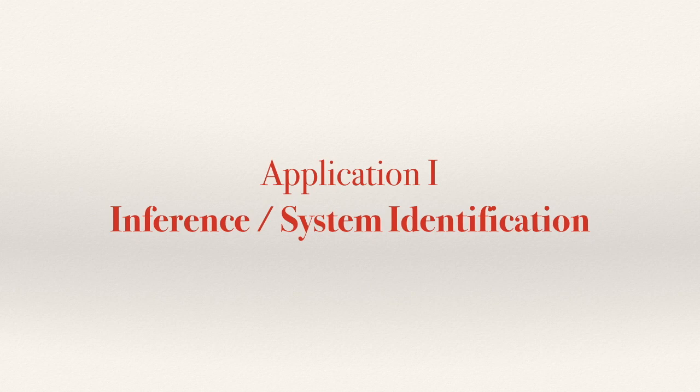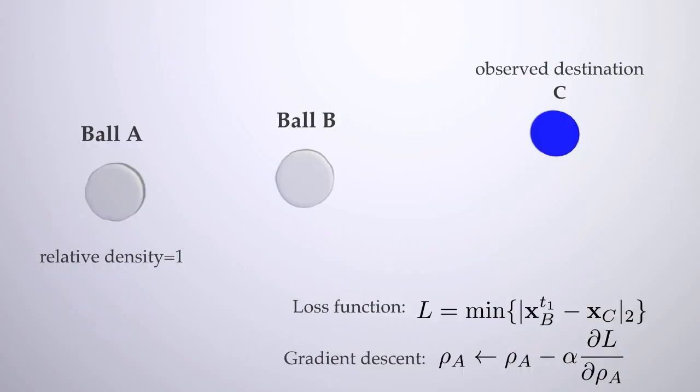As a motivating example, we show how gradients can be used to infer physical quantities, which is useful for system identification.